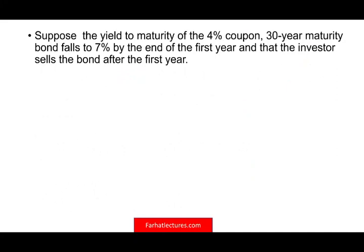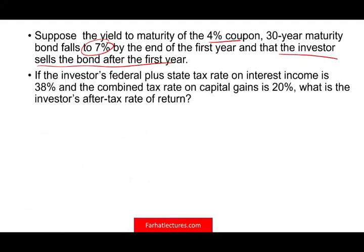Suppose the yield to maturity of the 4% coupon bond falls to 7% at the end of the first year, and the investor sells the bond after the first year. The coupon went down to 7% and we actually sold the bond. If the investor's combined federal plus state tax rate is 38% and the combined tax rate on capital gains is 20%, what is the investor's after-tax return? We need to compute the price of the bond at 7% and then determine the tax bill.